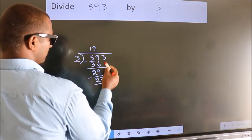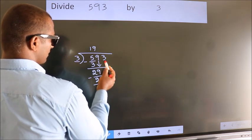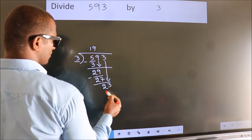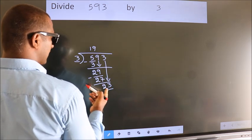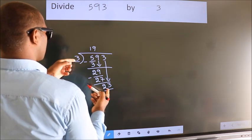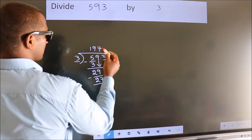After this, bring down the beside number. So, 3 down. So, 23. A number close to 23 in the 3 table is 3 times 7 equals 21.